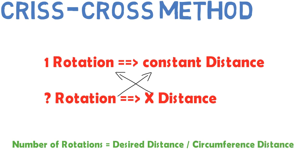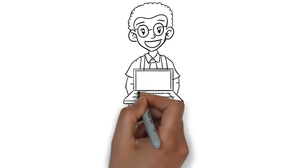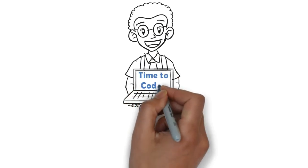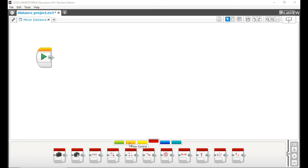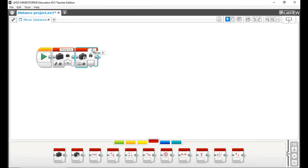And now we can translate this equation into the EV3 program. So first things first, we grab the variable block and name it distance, which is the desired distance you want the robot to pass. The second variable block is going to be a constant variable.